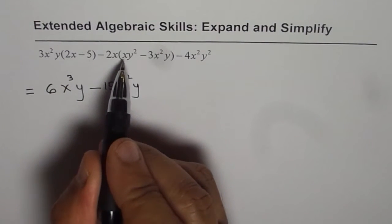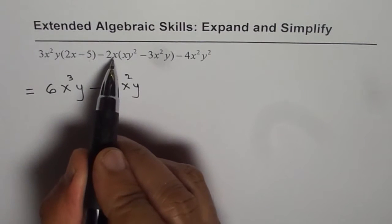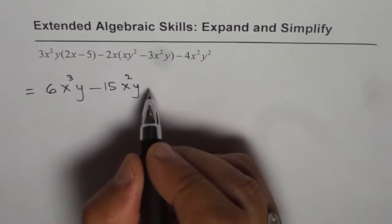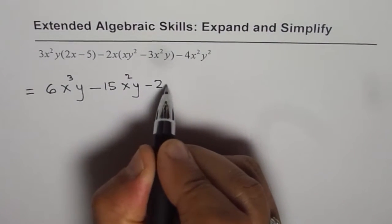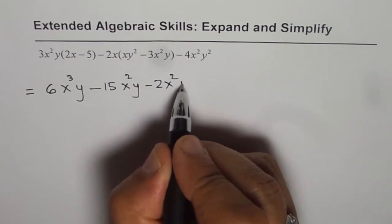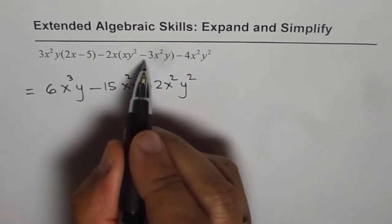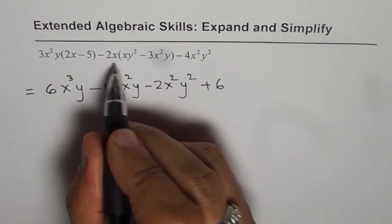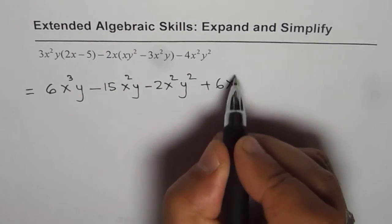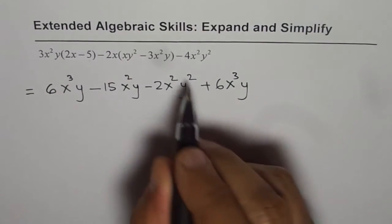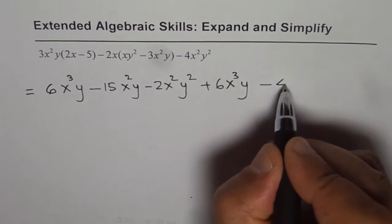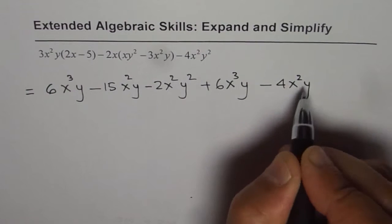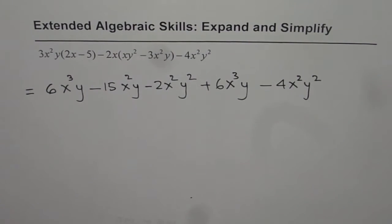Minus 2x times xy². So x exponent should increase by 1. So we get minus 2x²y². Minus and minus makes it plus. 2 times 3 is 6. x times x² is x³ and y. Now we have minus 4x²y². So we have applied distributive property to expand.